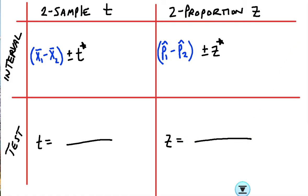The blue stuff that I wrote in front here for the intervals, those go on the tops of your test. So it would be x̄₁ - x̄₂. And then over here it would be p̂₁ - p̂₂.